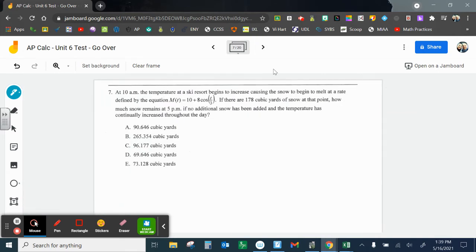All right, last multiple choice of the first part. And now we got at 10 a.m., temperature at a ski resort increases, causing the snow to begin to melt at a rate defined by the equation M(t). M(t), think of melt. So, and that's 10 plus 8 cosine t over 3. If there are 178 cubic yards of snow at that point, how much snow remains at 5 p.m.? And again, our initial time is 10, so we have to pay attention there. If there are 178 cubic yards, how much snow remains at 5 p.m.? If no additional snow has been added, the temperature has continually increased throughout the day.